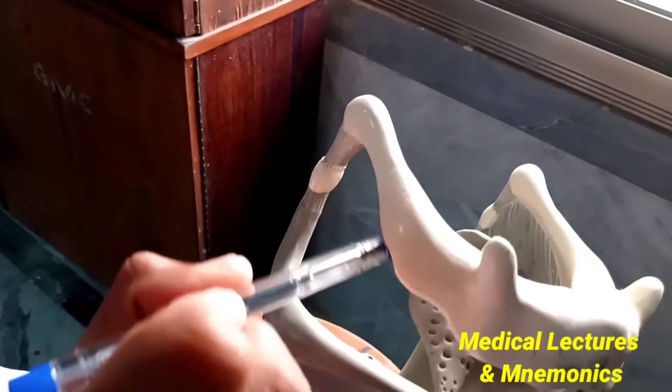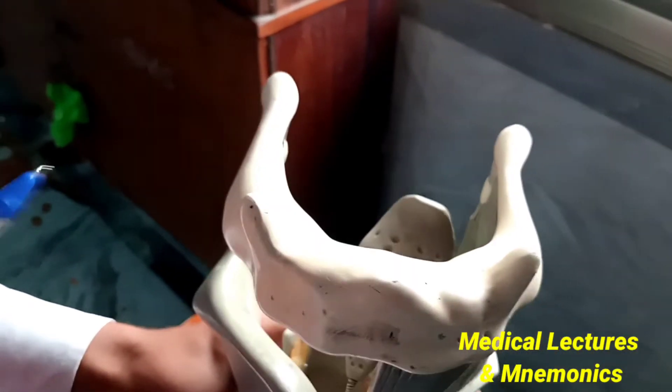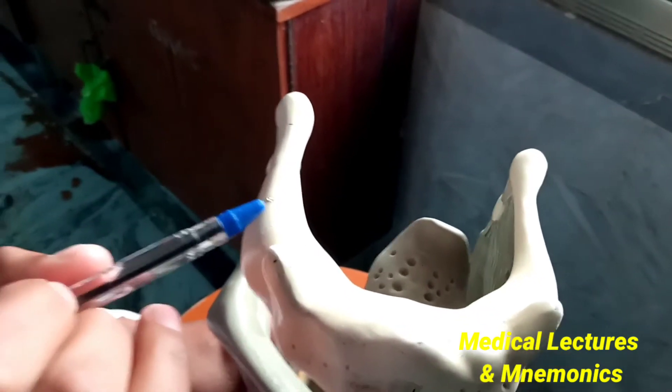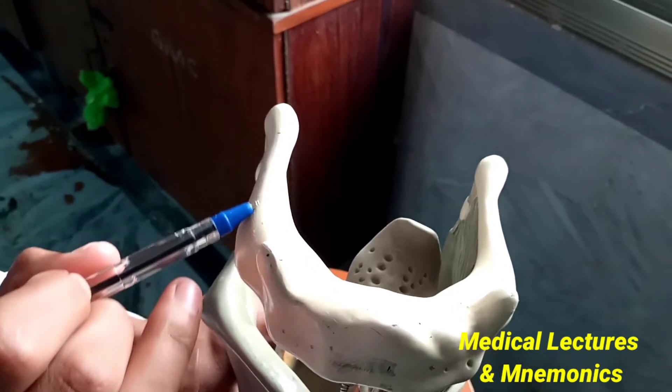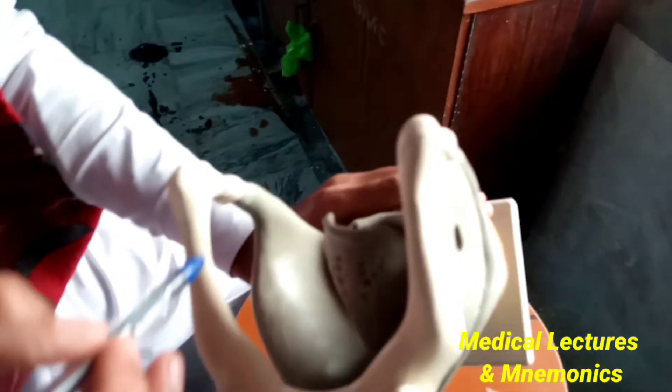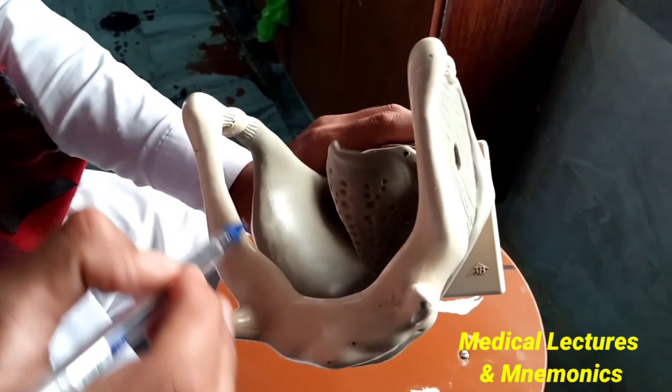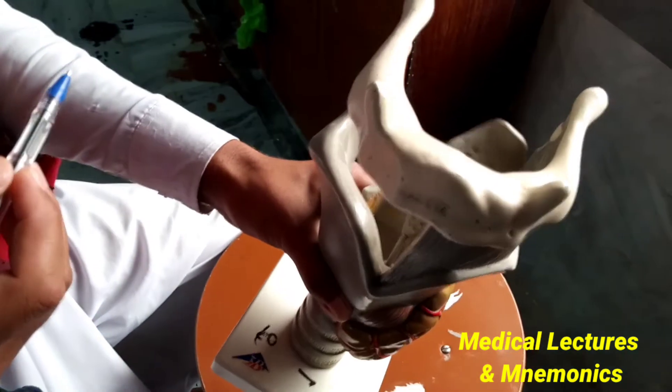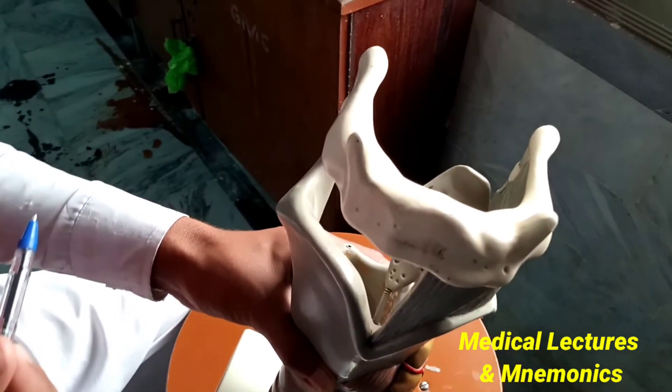It has two borders: one is the superior border, and the other is the medial border. This is called the medial border of the greater cornua of the hyoid bone.